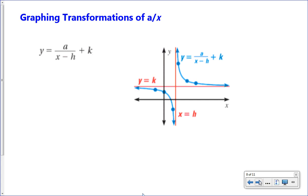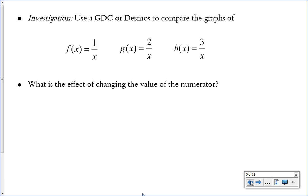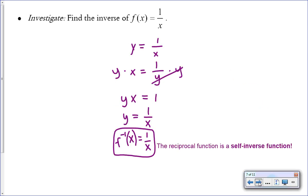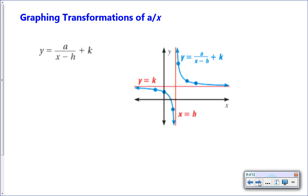To graph transformations of a/(x - h) + k, the h and k notation should look familiar. The center of the hyperbola for the parent function is at (0, 0), where the asymptotes cross. Adding or subtracting h and k shifts the graph left/right and up/down. The h value shifts the graph in the opposite direction from its sign, k shifts up or down, and a is a constant like 2 or -3. Note that h is in the denominator and k is outside the fraction.